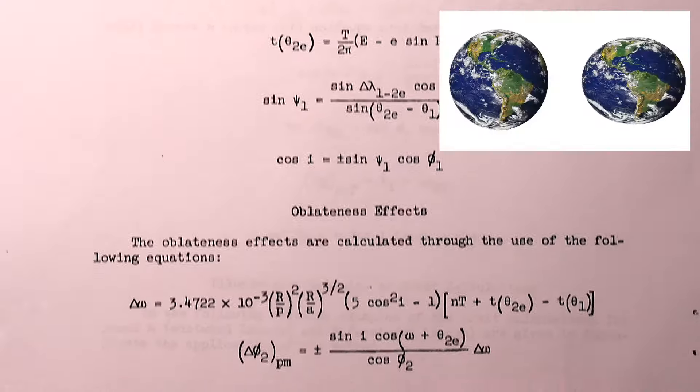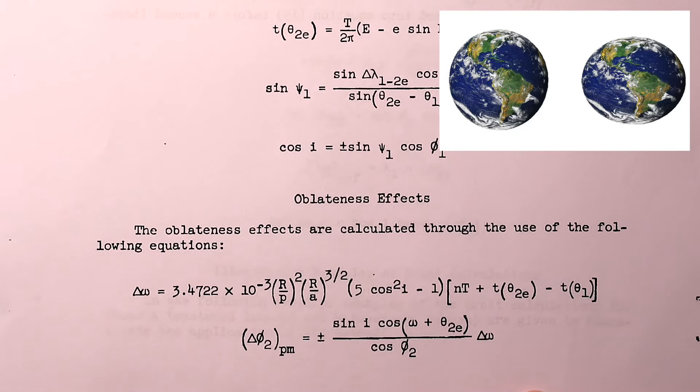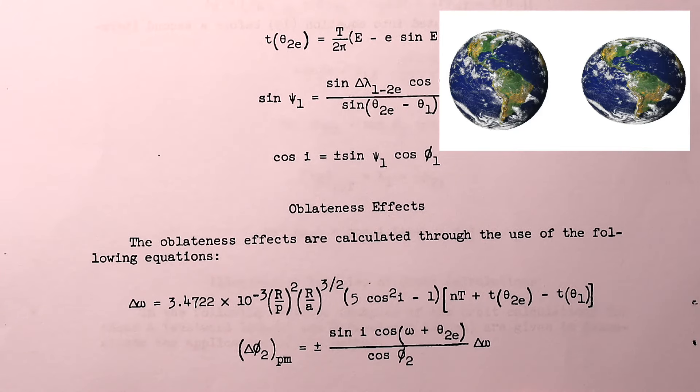There's also a mention of oblateness effects, because the earth is not perfectly spherical, and this oblateness is taken into account with small modifications to the latitude and longitude values after the first iteration.